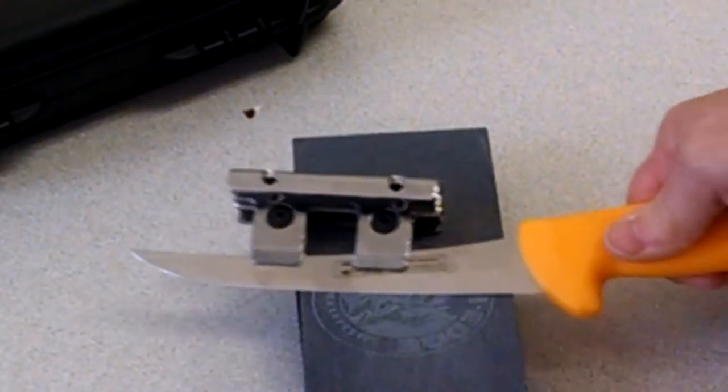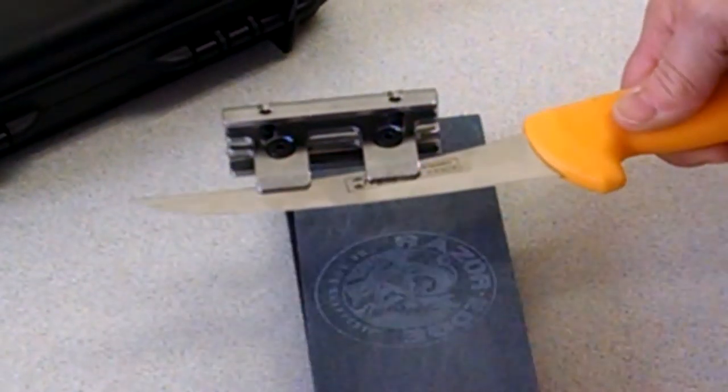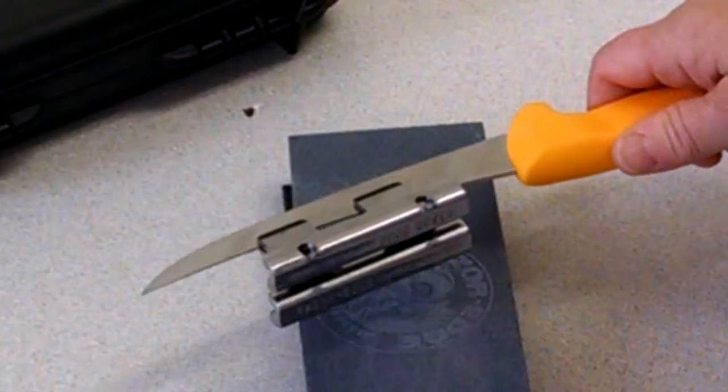When you can feel a burr along the entire length of the blade, repeat the process on the opposite side. Then move to the fine hone.